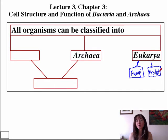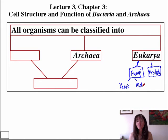These two categories can be further broken down. Within the fungal world, we have the yeast and the molds. And the protists can also be further split into the algae—quote-unquote—and the protozoa.